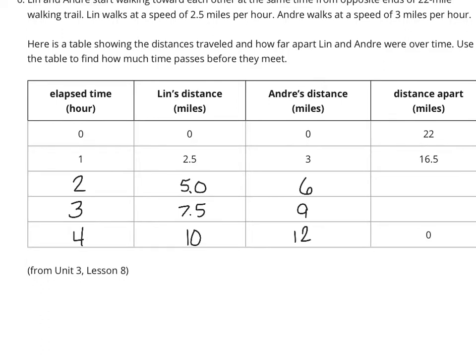Now, to get the distance apart, they started at 22 miles apart. They traveled a total of 5.5 miles here. And so, when you take 22 and subtract 5.5, you get that 16.5. Now, they're traveling a total of 5.5 miles every single hour. And so, if you take 16.5 minus 5.5, you actually get 11. And 11 minus 5.5 is 5.5. And then you get 0. So, how long did it take? Well, it says right there, 4 hours.